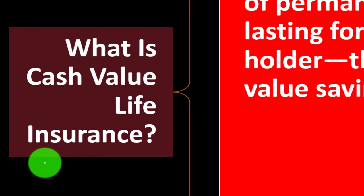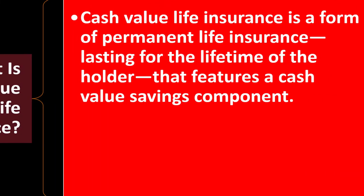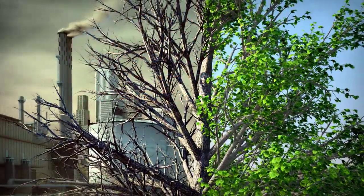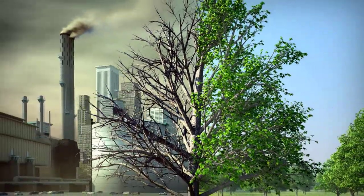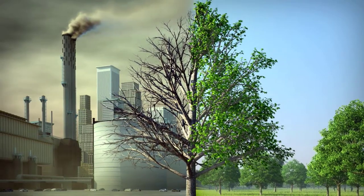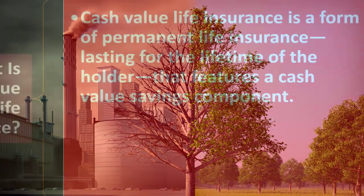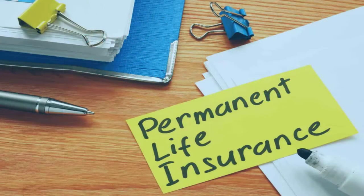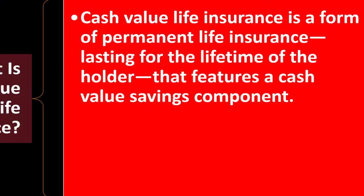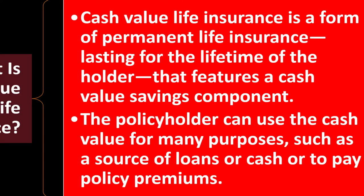So what is cash value life insurance? Cash value life insurance is a form of permanent life insurance, as opposed to term or pure life insurance, lasting for the lifetime of the holder and featuring a cash value savings component. If you think about the tree of life insurance, you have term on one side versus permanent life insurance on the other, with cash value life insurance falling under permanent.